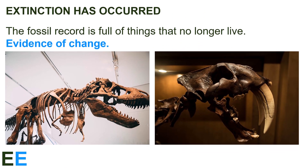In addition to providing estimates of the age of rocks, the rocks themselves show us things that lived before via fossils — the preserved imprints of things buried long ago. One of the most obvious things is that the fossil record is full of organisms that no longer live. Extinction has occurred during Earth's history. Animals like the Tyrannosaurus rex and saber-toothed cat are very different from things alive today — this is evidence of change, showing that the organisms on Earth have not always stayed the same.